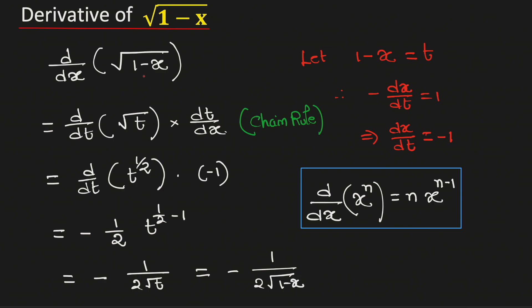Therefore, the derivative of square root of 1 minus x is equal to negative 1 over 2 root 1 minus x. And this is our final answer.